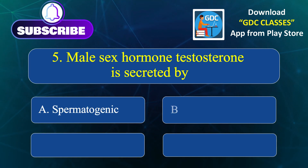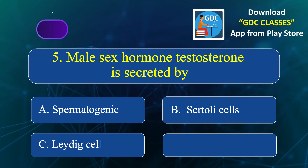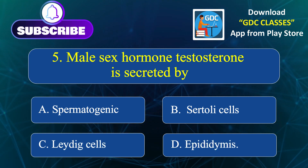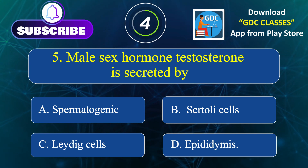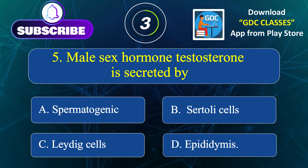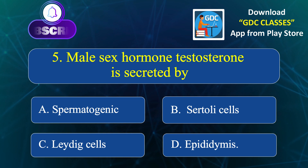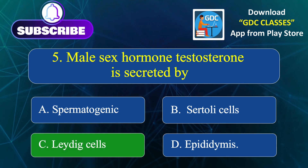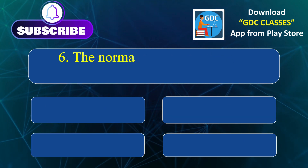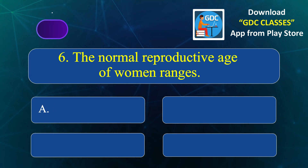Male sex hormone testosterone is secreted by: Option A. Spermatogenic cells, Option B. Sertoli cells, Option C. Leydig cells, Option D. Epididymis. Correct answer is Option C: Leydig cells.